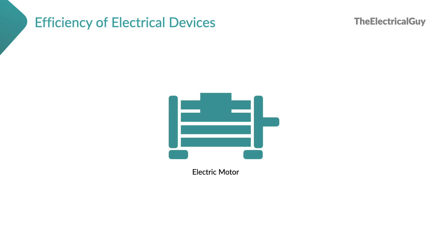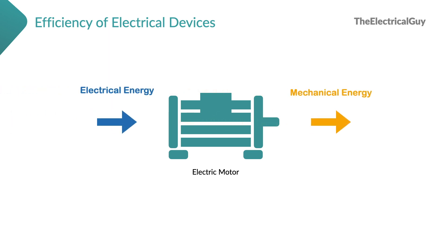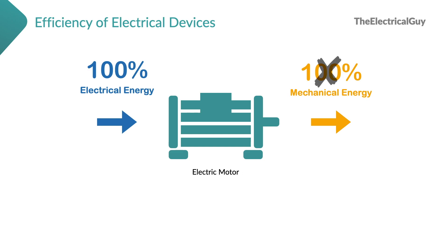Let's take a simple example of electrical motors. The job of an electrical motor is to convert electrical energy into mechanical energy. Now, I am giving 100% electrical energy as the input to this motor — I am saying in percentage just for understanding purpose. So when I am giving 100% electrical energy, naturally I would expect 100% mechanical energy as output from this motor. But do we get 100% mechanical energy as output? The answer is no.